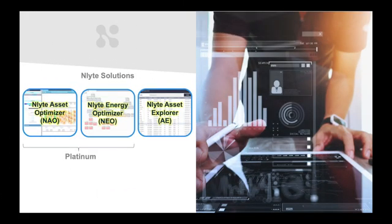The fact that you're listening to this video indicates there's a good chance you're already an InLite customer. The connectors and modules we'll be discussing here are additions and augmentations built on top of InLite Asset Optimizer, sometimes referred to as NAO, InLite Energy Optimizer, sometimes referred to as NEO, and InLite Asset Explorer, abbreviated as AE. If you ever hear the term platinum, that refers to InLite Asset Optimizer and InLite Energy Optimizer sold together. Today's top seven connectors and modules are those most purchased on top of these solutions.